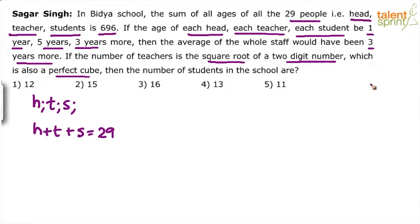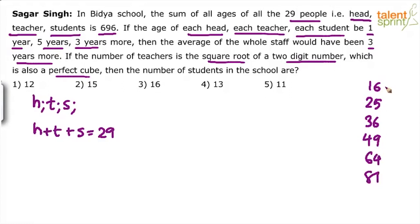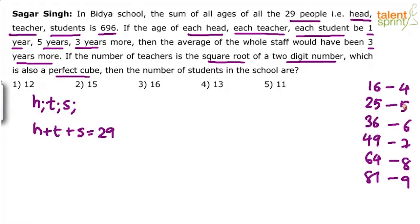The 2-digit numbers which are perfect squares are 16, 25, 36, 49, 64, 81. Their square roots are 4, 5, 6, 7, 8, and 9. The number of teachers is the square root of a 2-digit number which is also a perfect cube. So the square roots of 2-digit numbers are 4, 5, 6, 7, 8, 9.